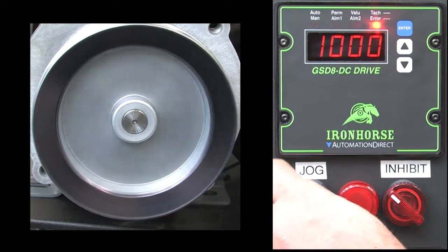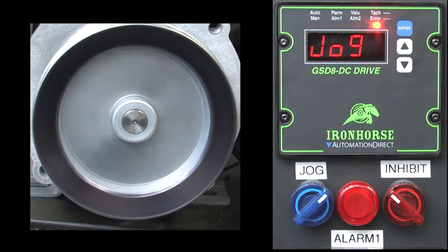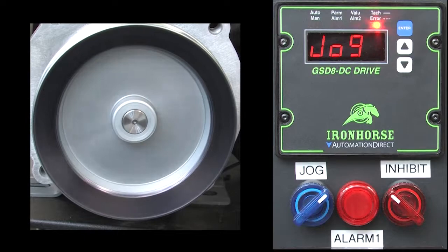If we jog to 1250 RPM, we don't get an alarm because we told it not to alarm during jog. Perfect.